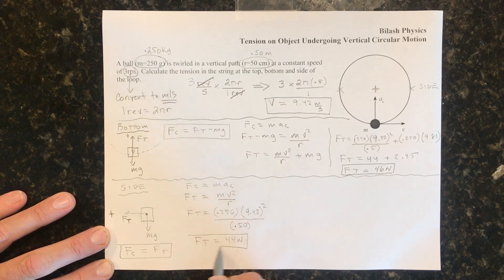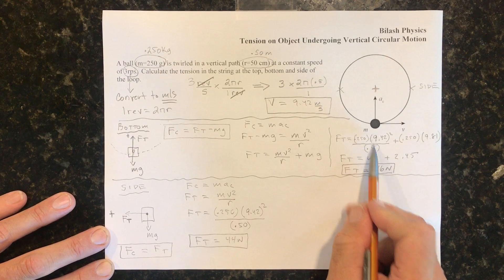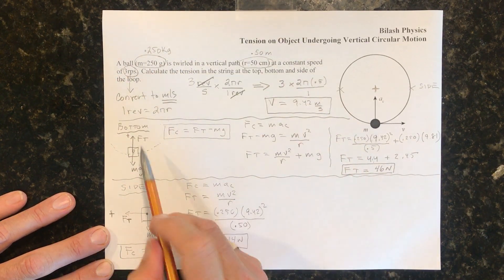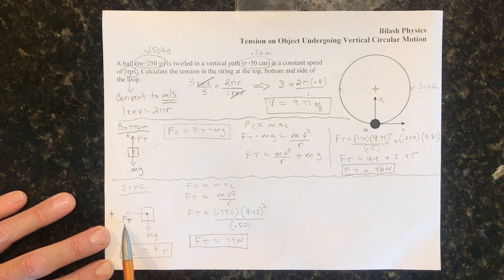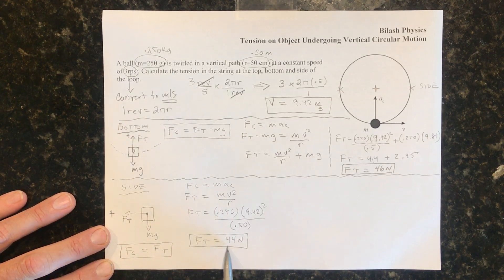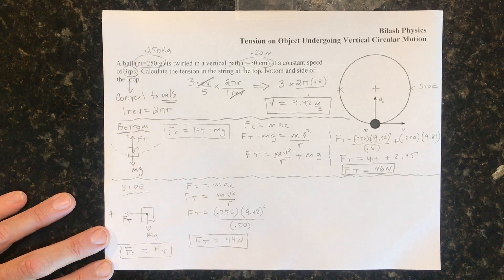And Ft works out to 44 newtons, which is what we got right here. At the bottom, Ft and mg were both important. Here, only Ft is acting. So Ft is 44 newtons. And that's the answer.